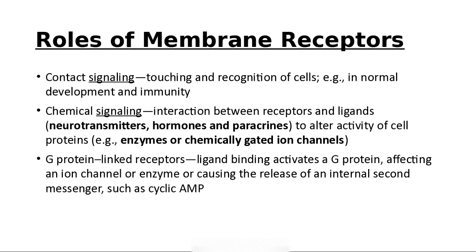Those membrane receptors are for signaling. Contact signaling — a cell touching another cell may help it know whether it belongs there or not, which is the immune system. Then chemical signaling, things like neurotransmitters and hormones. We also have alterations of cell activity such as enzymes and chemically gated ion channels, and ligand-binding gated channels that activate a G protein, which we'll discuss further later.